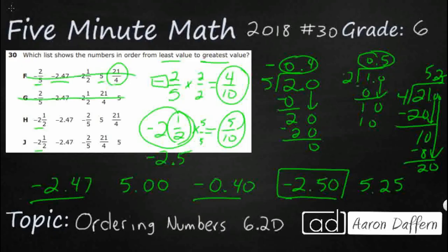Next is going to be negative 2.47. That's really close, but it's a little bit closer to zero than negative 2.5 is. So both of these still work. Then our next one is going to be negative 0.40, and that is going to be our negative 2 fifths, so both of those work. And so next we just got to put our 5, and then our 5.25. 5, 5.25. H is our answer. Thank you.